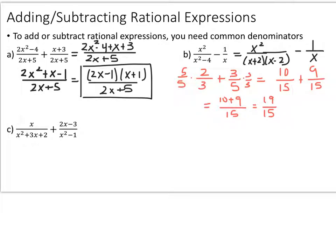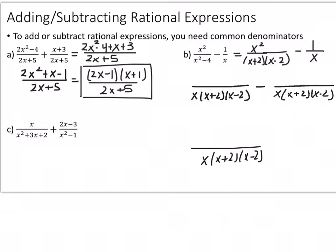The same holds true for the rational expression. There's nothing you can multiply one denominator by to get the other, so the final answer will have the two denominators multiplied together: x times x plus 2 times x minus 2. To get that, multiply each fraction by what's needed. The first fraction needs an x in the denominator, so the numerator also gets an x, making it x cubed. The second needs x plus 2 times x minus 2, so its numerator becomes x squared minus 4. Now go ahead and pause the video and simplify into the final answer.